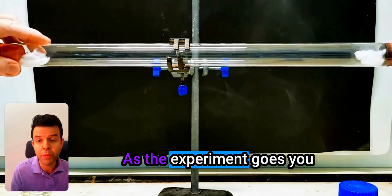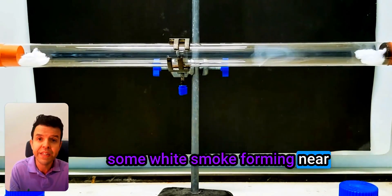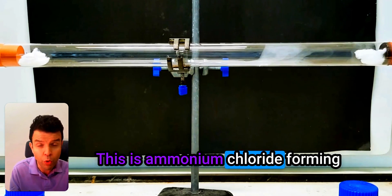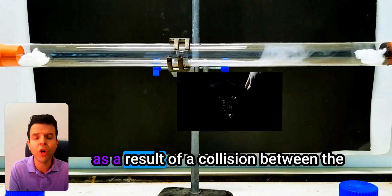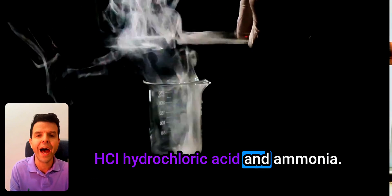As the experiment goes, you would start to notice that there is some white smoke forming near the end of the hydrochloric acid. This is ammonium chloride forming as a result of a collision between the HCl hydrochloric acid and ammonia.